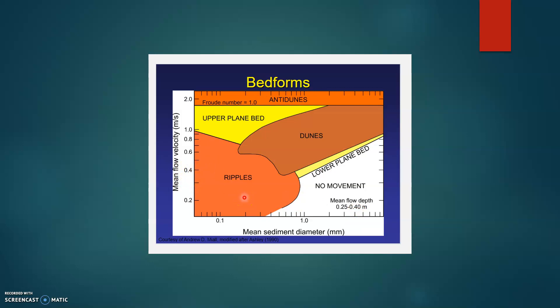The ripples are formed when you have a low mean flow velocity and a small sediment diameter. And once you increase the sediment diameter, then the ripples gradually form dunes.